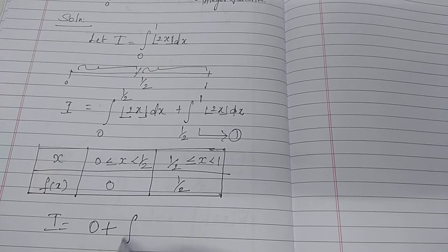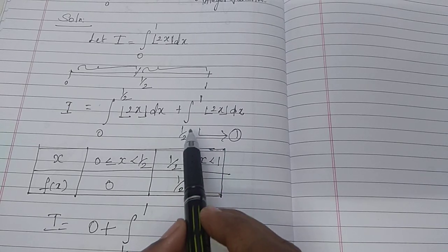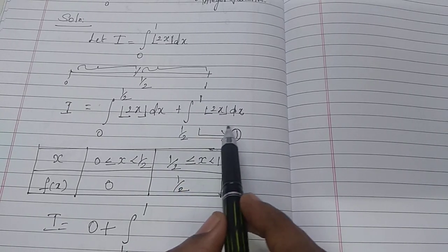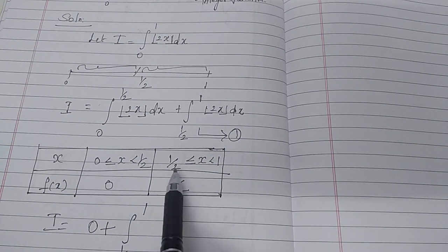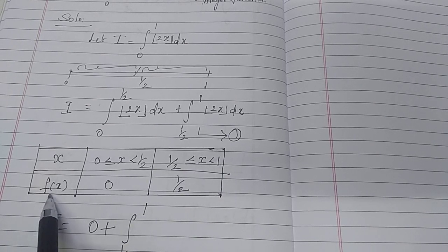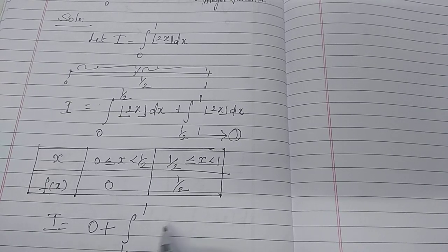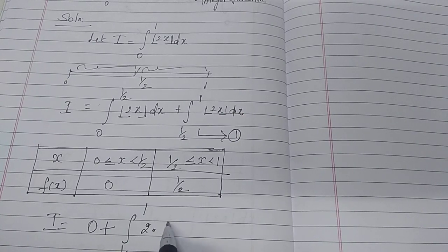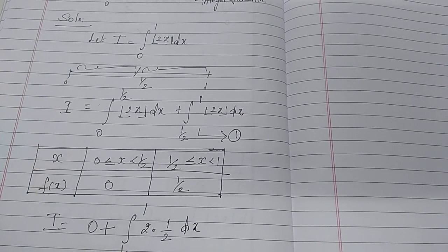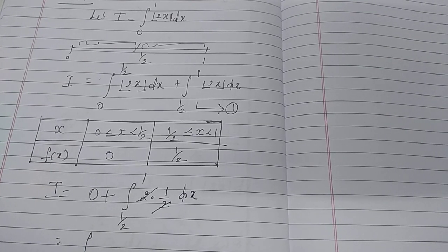For the second term, the integral from 1/2 to 1: here x takes values in the range 1/2 ≤ x < 1, so [2x] takes the value 1. Substituting, 2x becomes 1 in that interval. The 2x and the 1/2 terms cancel, giving us the integral from 1/2 to 1 of 1 dx.